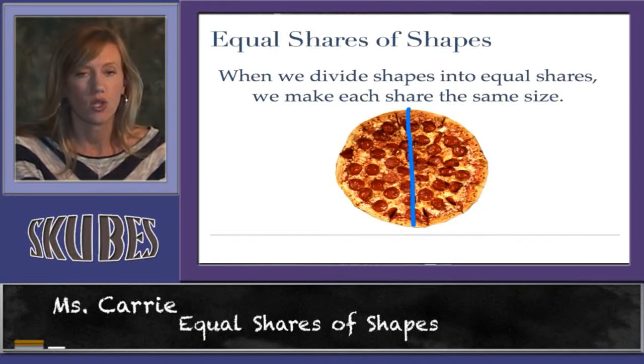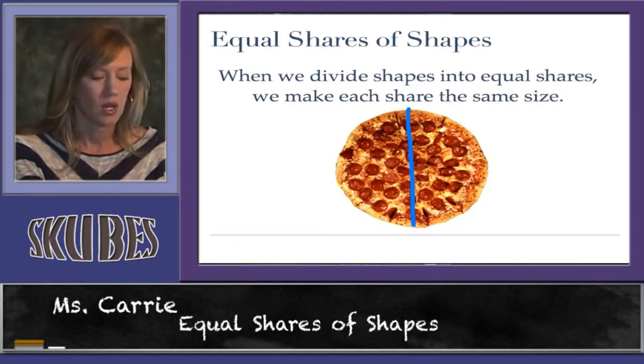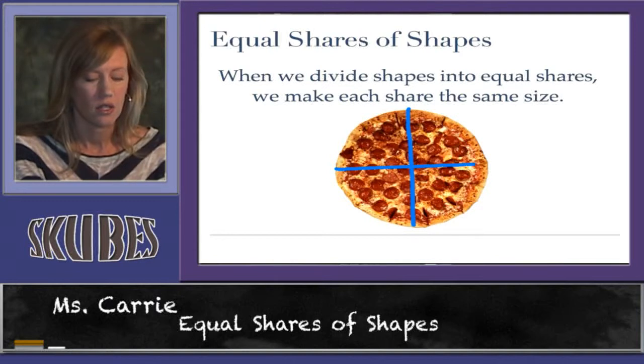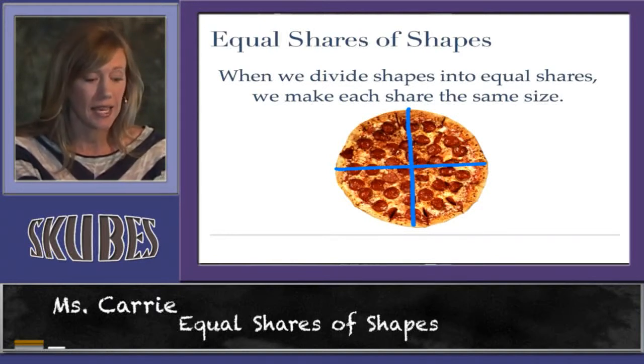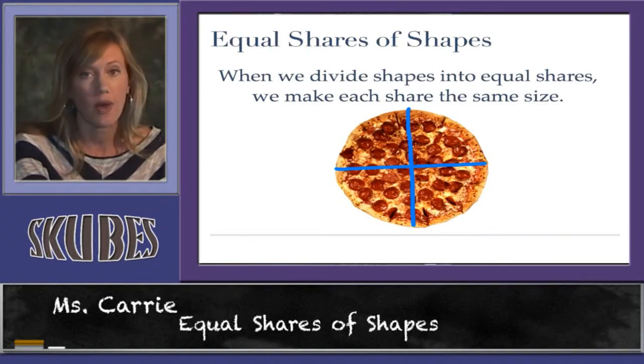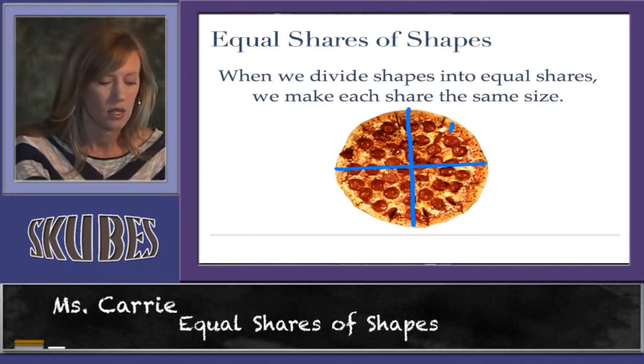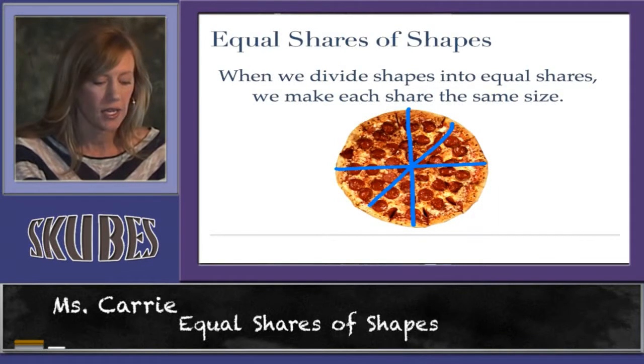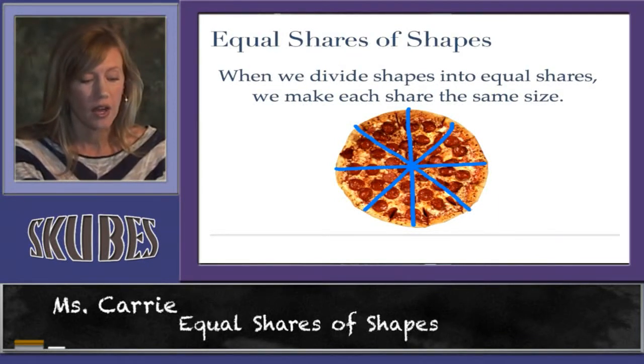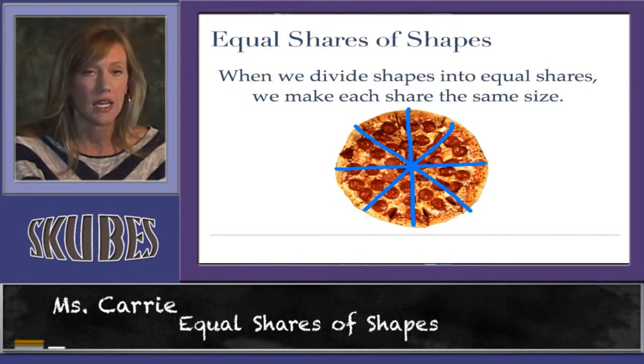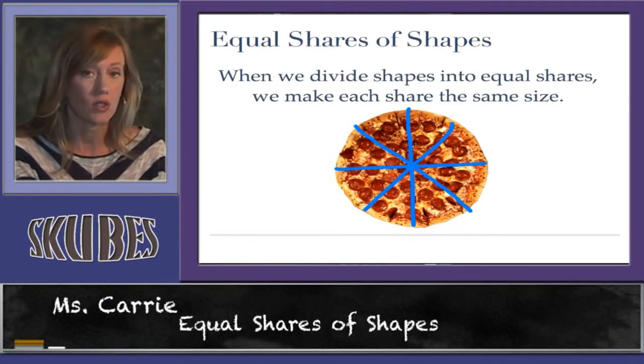Now let's say that two more friends came. So you would divide it again into four equal shares. So each piece is the same. Now let's say you had eight friends. You could divide it again and you can divide it again. Now we have eight pieces and each piece is the same size. They're equal.